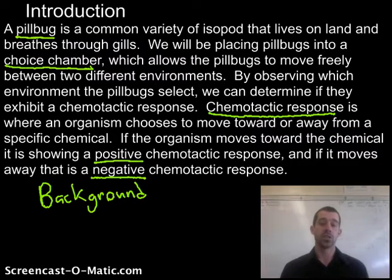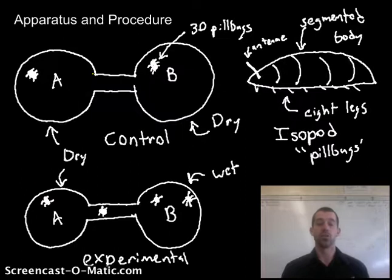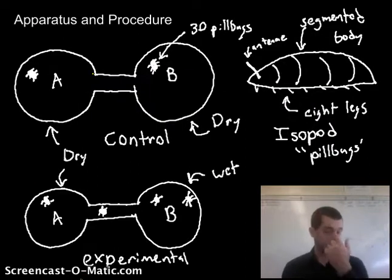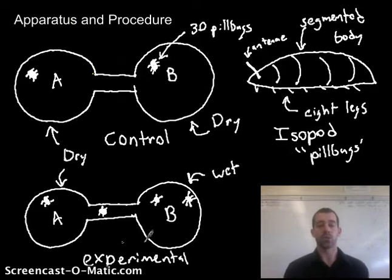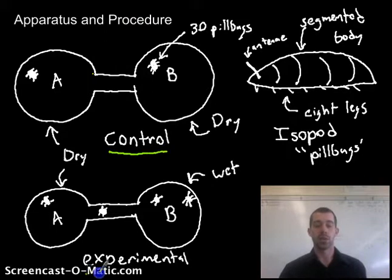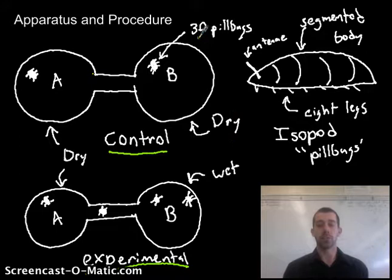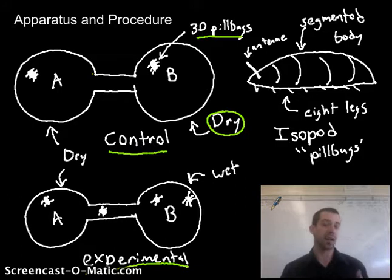After you've finished the introduction, you're going to move on to the apparatus and procedure. In the apparatus and procedure we first want to draw a little sketch — this helps people understand what's going on. Over here I have a sketch of my apparatus: my two choice chambers, first the control choice chamber and then the experimental one. You can see I've given important details — I've labeled how many pill bugs there are and what the conditions are like. You have to label your apparatus or it doesn't count.